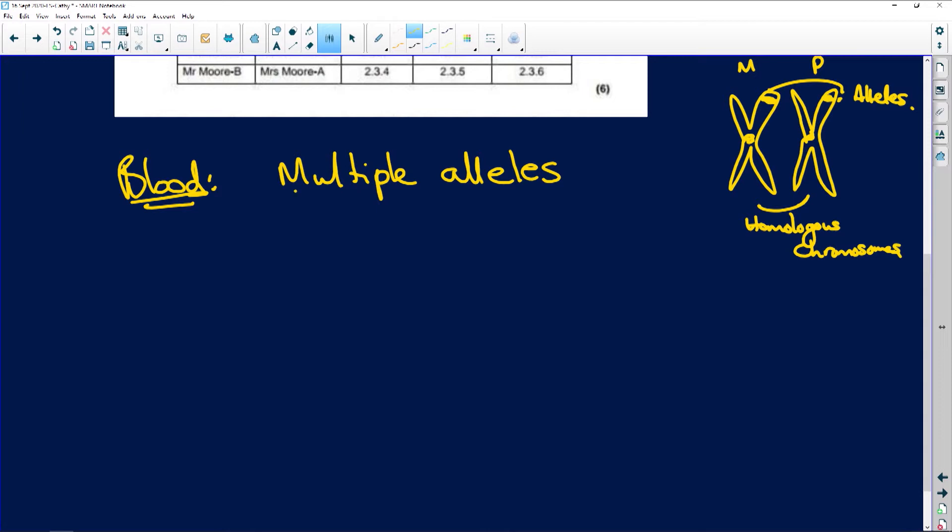So when we talk about multiple alleles, we're saying that there are more than two alleles. There are more than two for a specific trait. In this case, for blood. So the multiple alleles we've got is for blood group A. This is for blood group B, and then we have this for blood group O.